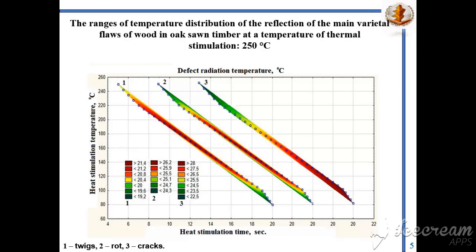As a result of the experiment, an overlap of the infrared reflection temperature ranges of the investigated wood deficiencies was also found, which is possible to eliminate by using RGB filters.